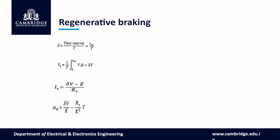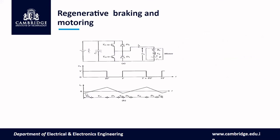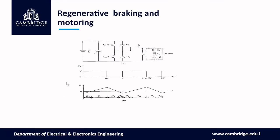If δ > E/V, the operation is motoring; if δ < E/V, the operation is regenerative braking. Transition from motoring to braking occurs when δ = E/V. The switching sequence shows: from period 0, diode D2 is on, then transistor TR1 is switched on, then diode D1 is on, then transistor TR2 operates. In this way, by switching between TR1 and TR2, both motoring and regenerative braking operations can be obtained.